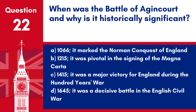Question 22. When was the Battle of Agincourt, and why is it historically significant? a. 1066 – it marked the Norman Conquest of England. b. 1215 – it was pivotal in the signing of the Magna Carta. c. 1415 – it was a major victory for England during the Hundred Years' War. d. 1645 – it was a decisive battle in the English Civil War. Answer: c. The Battle of Agincourt in 1415 is historically significant for being a major English victory against a numerically superior French army.